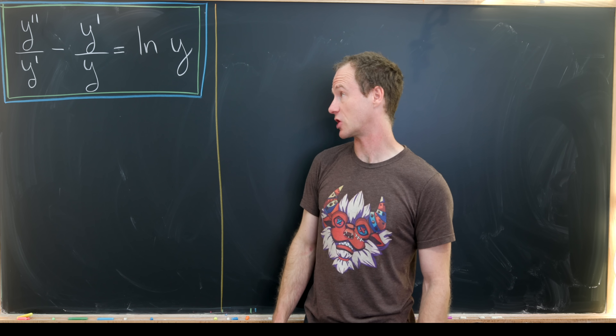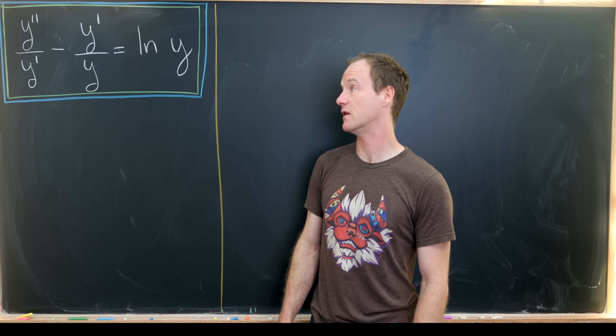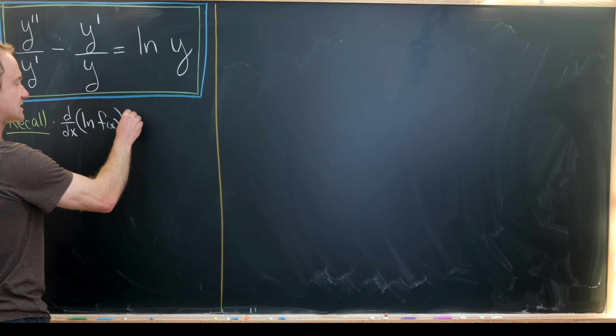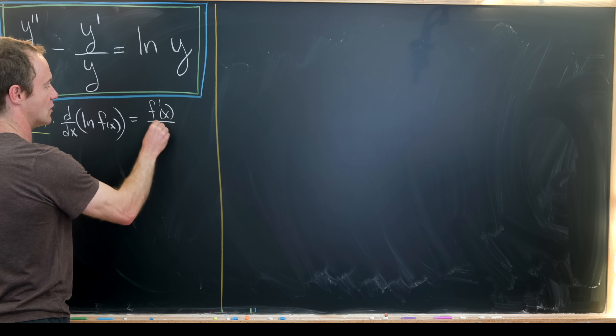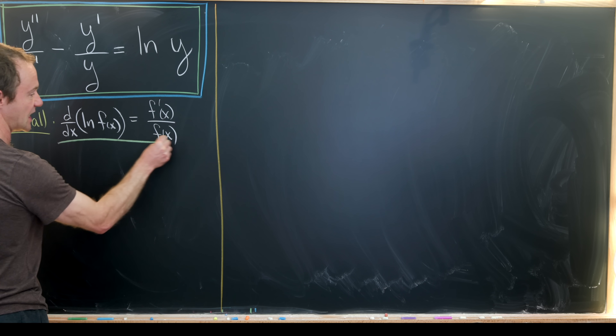Looking at those first two terms, we notice it looks like we've taken something like a logarithmic derivative of something to achieve those. We'll recall the following fact to rewrite these first two terms: if we take the derivative of ln(f(x)), we get f'(x) / f(x). The f'(x) comes from the chain rule, whereas the f(x) in the denominator comes from taking the derivative of natural log.